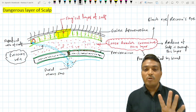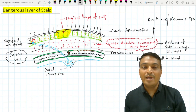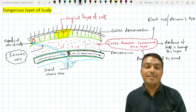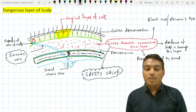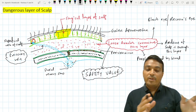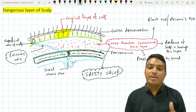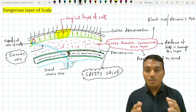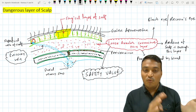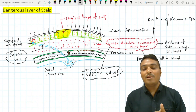So these are the four reasons why the loose areolar connective tissue layer is called the dangerous layer of the scalp. This layer is also surgically very important because the fourth layer of the scalp acts as a safety valve.